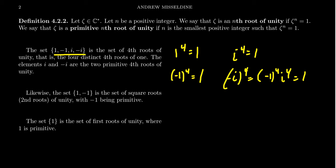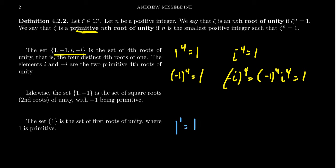We say that a root of unity is primitive — a primitive nth root of unity — if no smaller power of n will get you to 1. What I mean is that n is the smallest positive integer that makes zeta to the n equal to 1. For example, looking at these numbers, 1 can be reached by a much smaller power: 1 to the first equals 1. So 1, although it's a fourth root of unity, is not a primitive fourth root of unity.